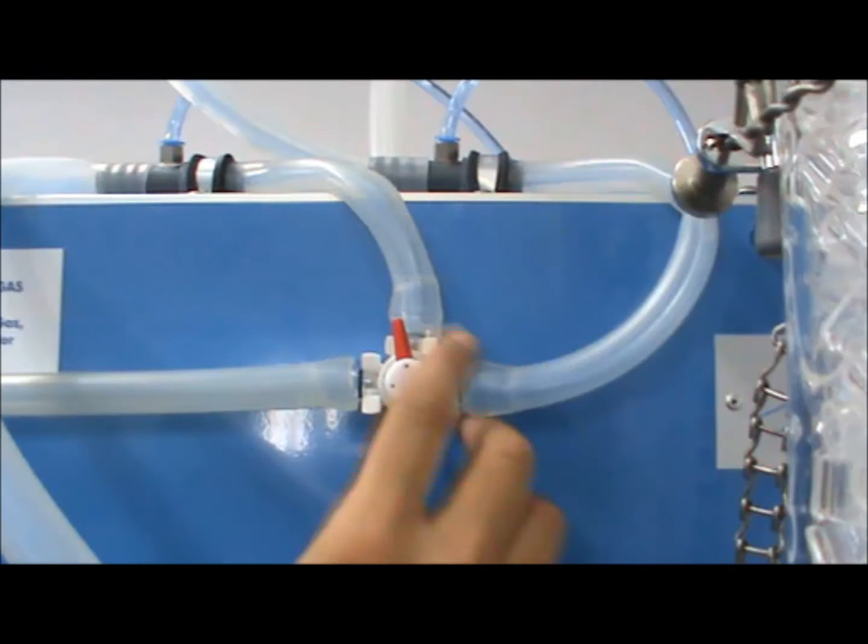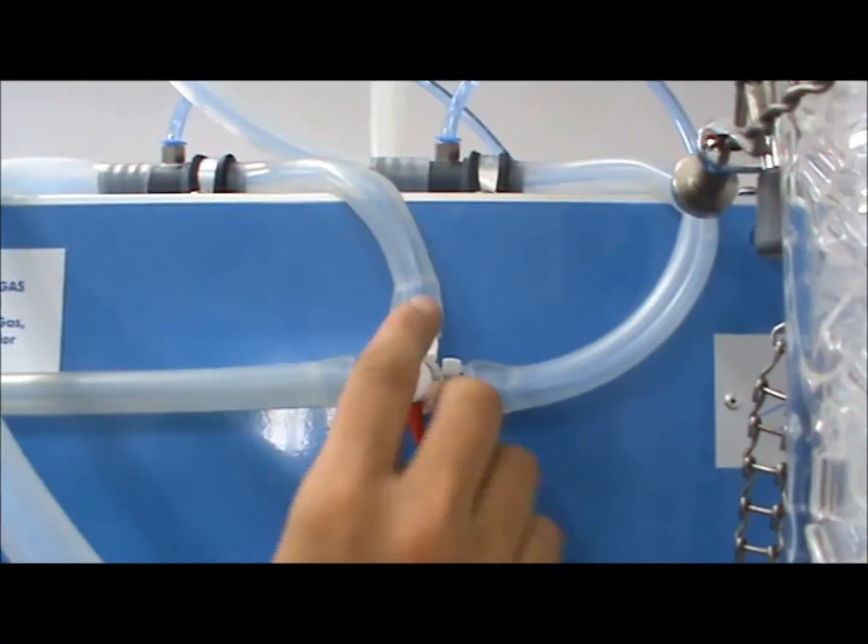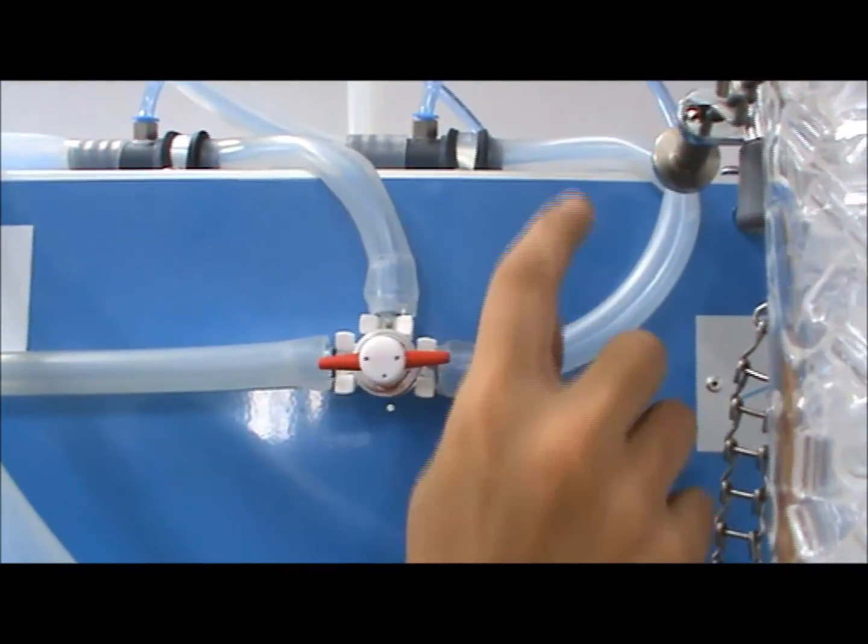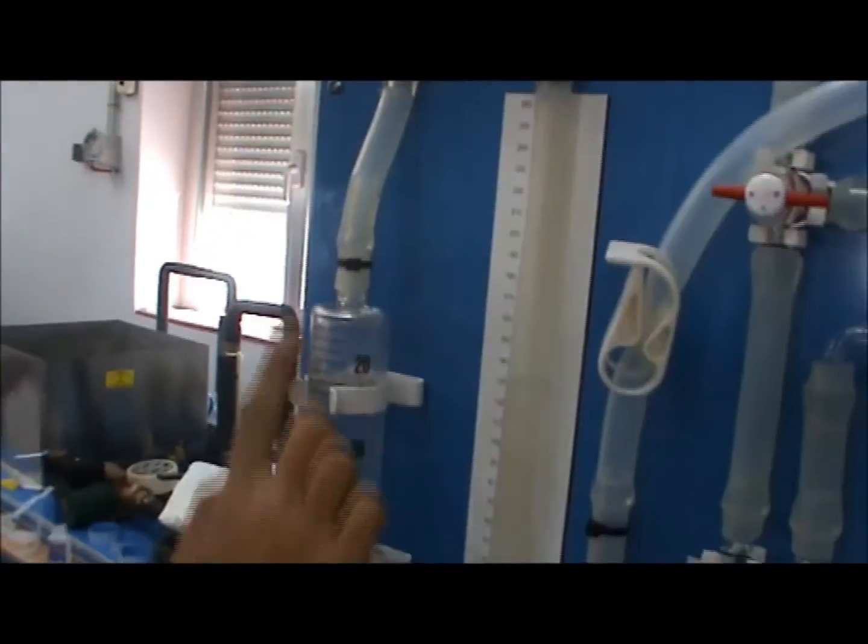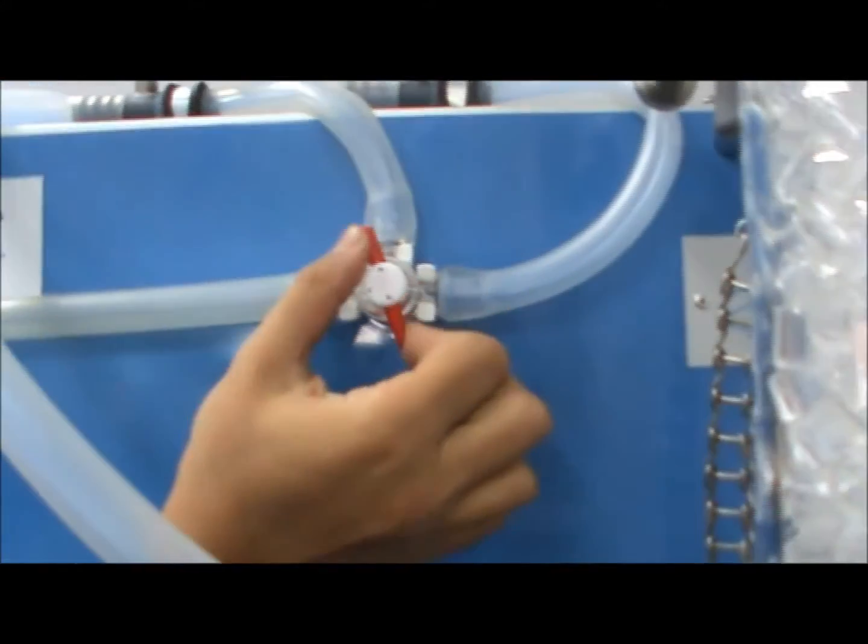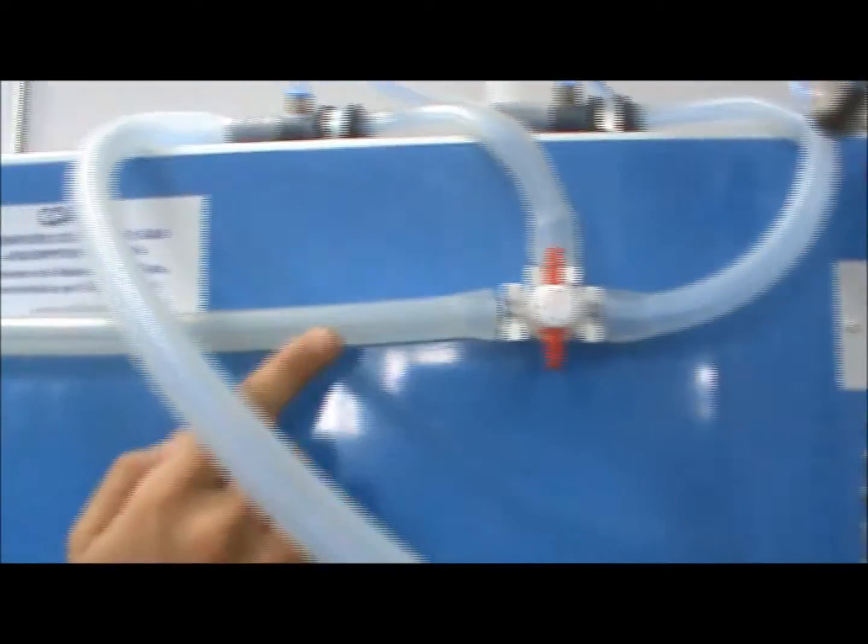Arranging valve VT1 determines where in the column samples are taken from. Positioning the valve like this, samples are taken from the upper part. In today's experiment, we will use this configuration, which takes samples from the middle of the column.